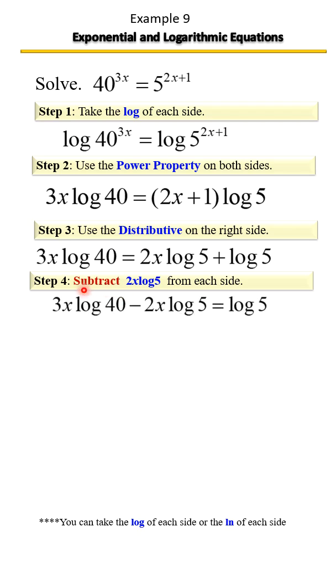And now that I have my x's together, I want to get x by itself. So I need to factor out the x from that left side. So once I take the x out, I'm going to write what's left.